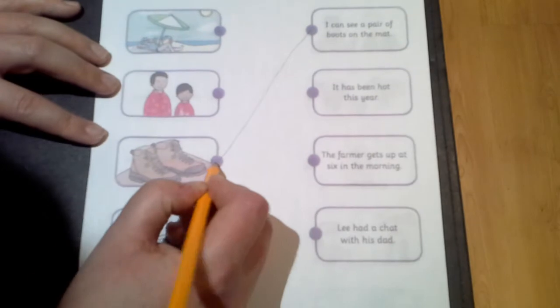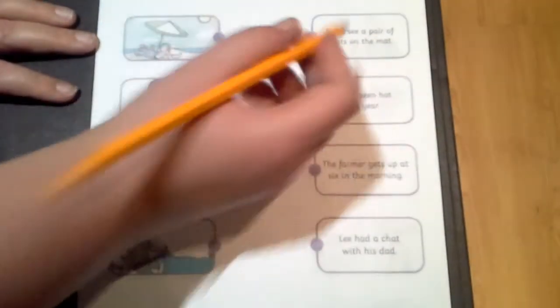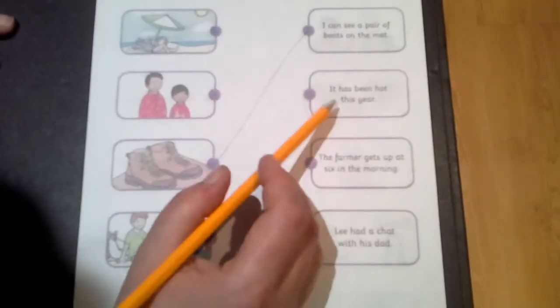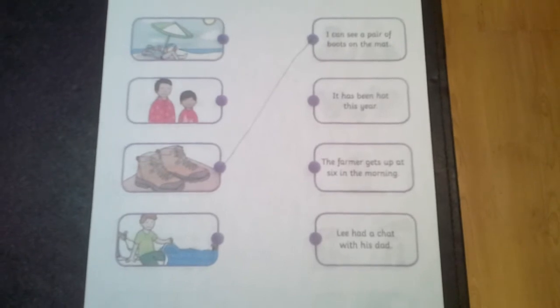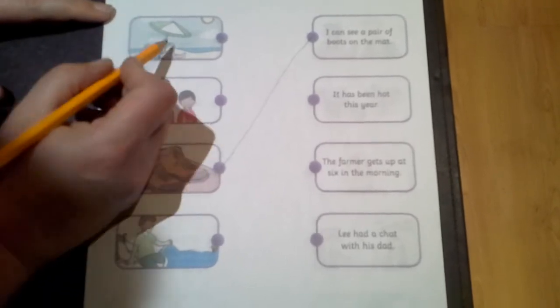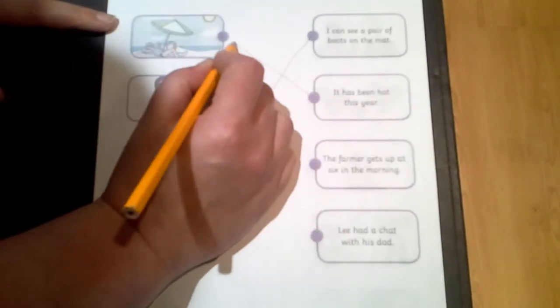So we're going to get our line, we're going to draw it and match it with the picture and the caption. Now the next one, it has been hot this year. So which of the pictures match that caption? That's right children, it's here. Draw the line.